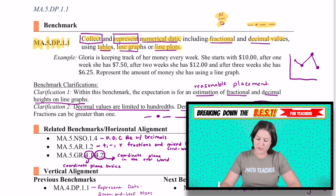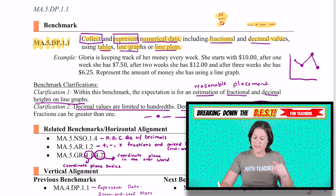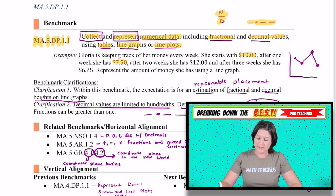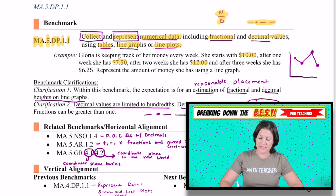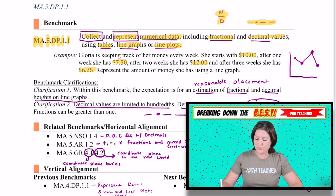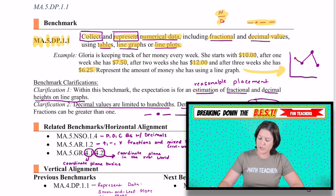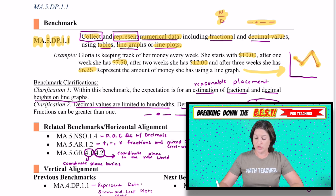Here's an example. Gloria is keeping track of her money every week. She starts with $10. After one week she has $7.50, after two weeks she has $12, and after three weeks she has $6.25. Represent the amount of money she has using a line graph. This is kind of what a line graph looks like — we're starting at $10, going down to $7 — you can see the up and down going on there. This is a great way to showcase the use of decimals using a line graph.